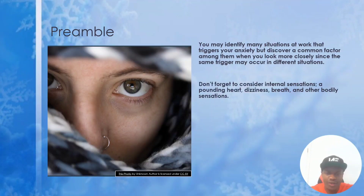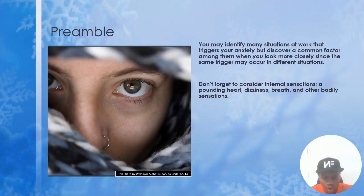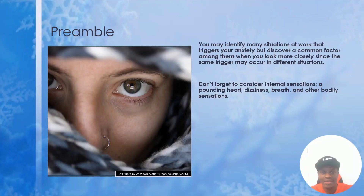Don't forget to consider the internal sensations you might be feeling as you go through this worksheet. Consider your bodily sensations, like your breathing, dizziness, the pounding of your heart — the complete sensations you can remember. When using this worksheet, make sure to write it down in as much detail as you can, but don't get stuck trying to think of those specific triggers and situations.